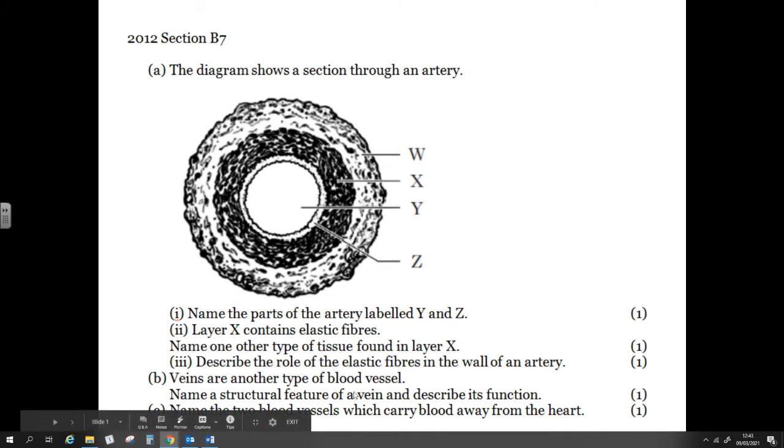Okay, parts of the artery labeled Y and Z. So Y is the lumen, Z is the endothelial lining. X contains elastic fibres. Given another type of tissue found in layer X, so connective tissue and elastic fibres are found in X, as well as smooth muscle. Describe the role of the elastic fibres in the wall of the artery. They allow it to cope with large pressure changes that occur during ventricular systole and diastole.